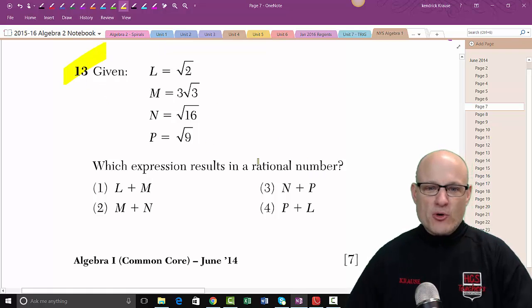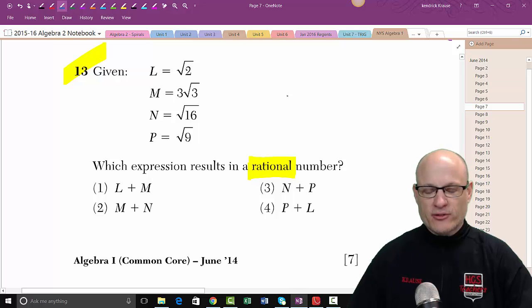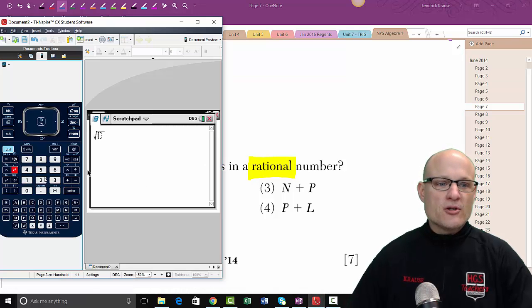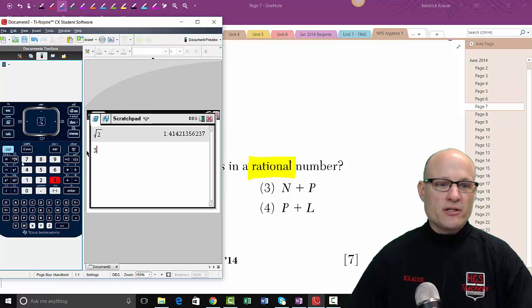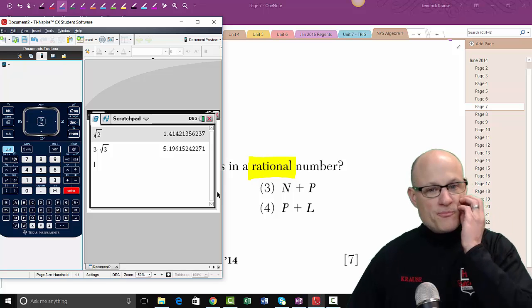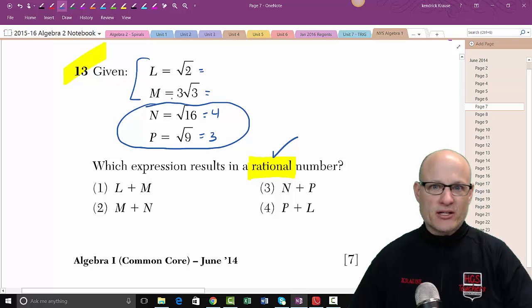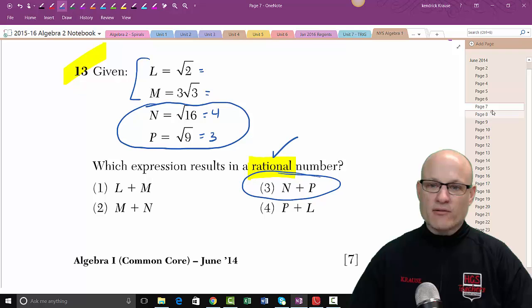Problem 13. The most important word in this problem is rational number. A rational number can be written as a fraction, non-repeating, non-terminating. When you type this into your calculator, the square root of two, you get 1.414 blah blah blah. If you type this one in your calculator, three square root of three, you get a whole bunch of crazy stuff. But clearly this is four and clearly this is three. I don't want all those crazy decimals, so I'm gonna try to find one that just uses N and P. N plus P, the answer is seven. Boom, done, problems over with.